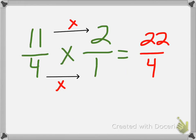And then we multiply straight across. 11 times 2 equals 22. 4 times 1 equals 4. And then we have another improper fraction for the multiplied amount.